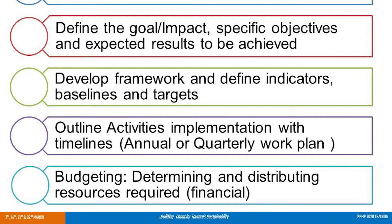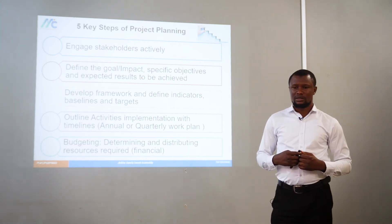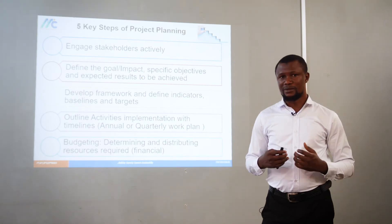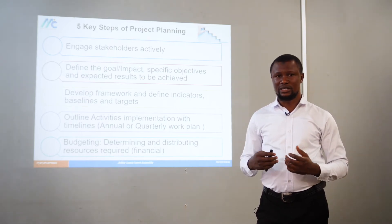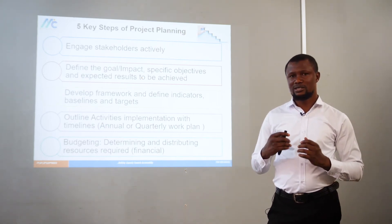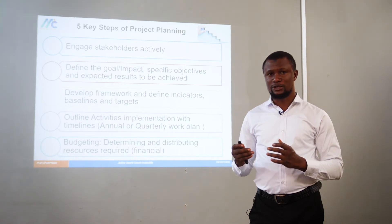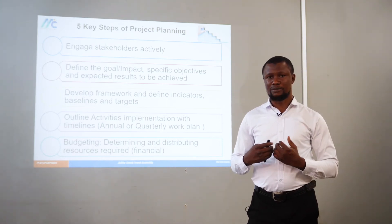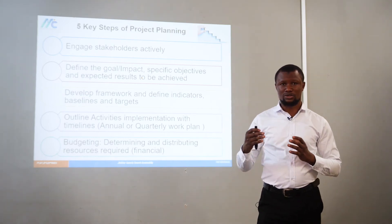The next step in planning your project is to outline your key activities and implementation with respect to the project timelines. Over the years of my M&E experience, I've realized that many development organizations come up with five-year robust work plans just to respond to the donor. I advise taking two steps back to break down that five-year work plan into annual work plans, and then further divide those into quarterly work plans. This will help you better understand your projects and track activities using M&E tools to measure progress towards your targets more easily.